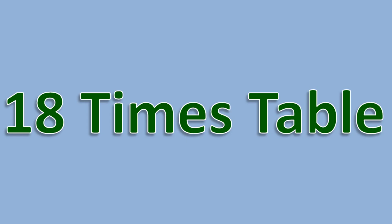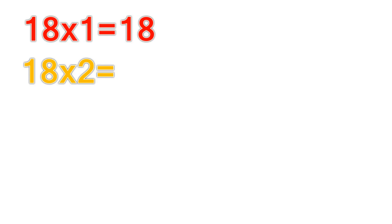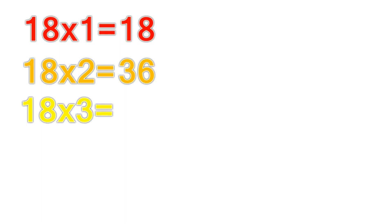18 times table. 18 times 1 equals 18. 18 times 2 equals 36. 18 times 3 equals 54.